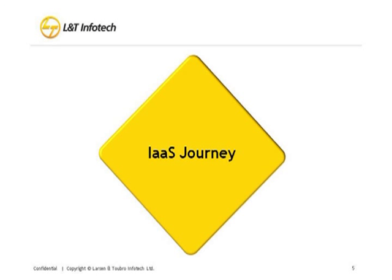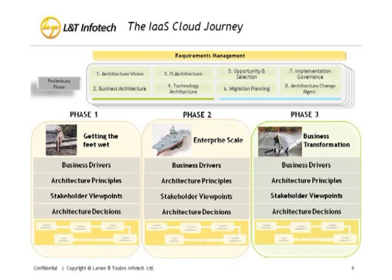Starting with our IaaS journey, we first start with defining what our business drivers are. We did this in three phases — after defining the business drivers and reviewing them at each phase, we then form the architecture principles that drive that particular phase. We get viewpoints from various stakeholders, whether from the IT infrastructure department, a customer viewpoint, or a developer's viewpoint, and then take certain architecture decisions.